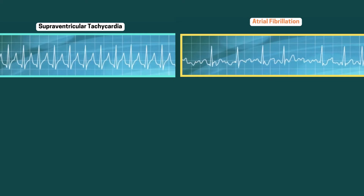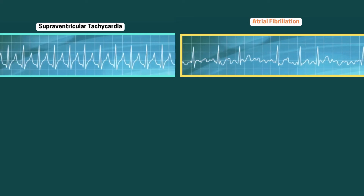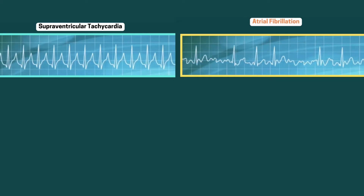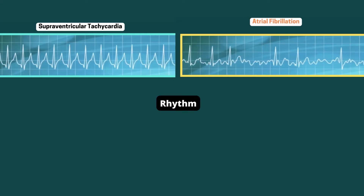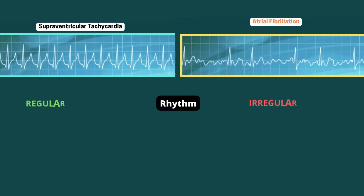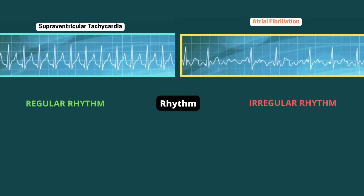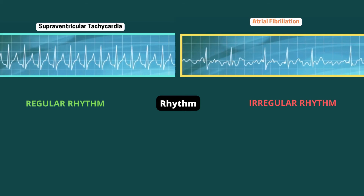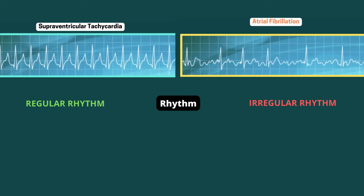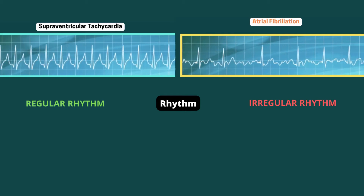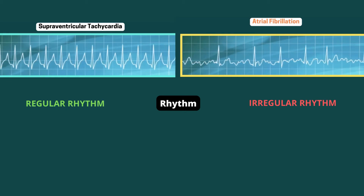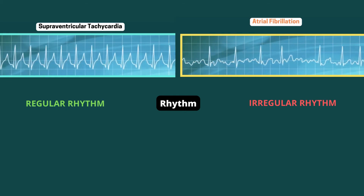Now let's differentiate between the two. In SVT, the rhythm is regular but rapid, whereas in atrial fibrillation the rhythm is irregular and chaotic.